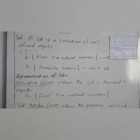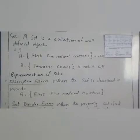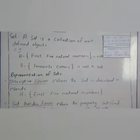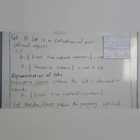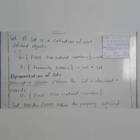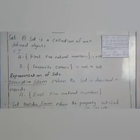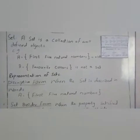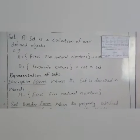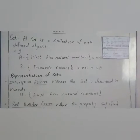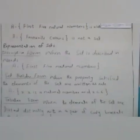For example, A is equal to first 5 natural numbers is a set because first 5 natural numbers are well-defined and no one can change these numbers. And B is equal to favorite colors is not a set because everyone has its own choice of favorite colors.